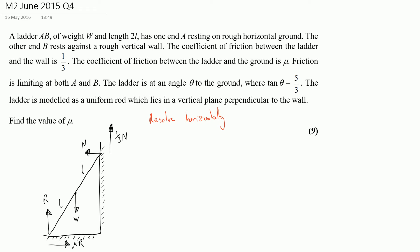Resolving horizontally, I'm thinking about the horizontal forces, so I've got that μR will be equal to N. After resolving horizontally, my next step is to resolve vertically. The forces acting vertically are my friction, my weight, and my normal reaction, so I've got R plus one third of N is going to be equal to W.